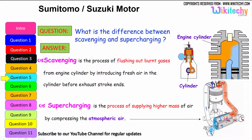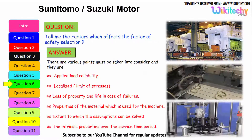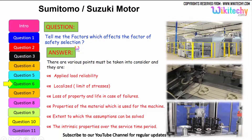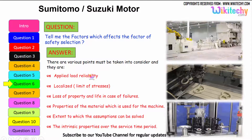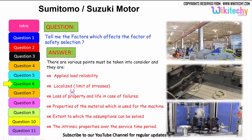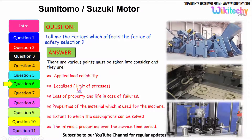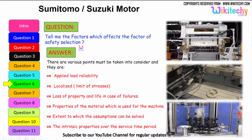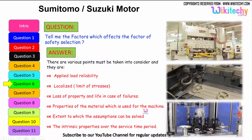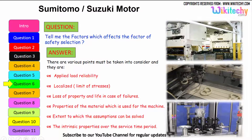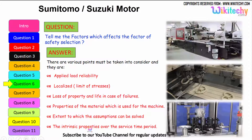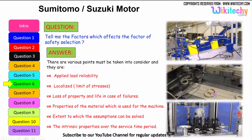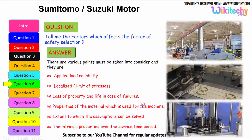A high pressure of air is injected into the cylinder to compress the atmospheric air. Now let us see the factors which affect the factor of safety selection. These include load reliability, limit of stresses thus localized, loss of property and life in case of failures, properties of the material used for the machine, the extent to which assumptions can be resolved, and the intrinsic property over the service time period — everything must be considered for factor of safety selection.